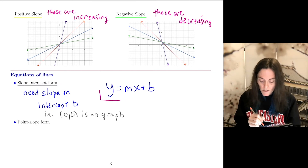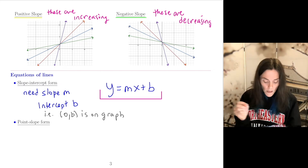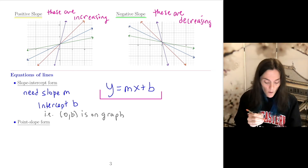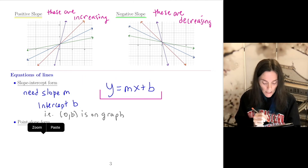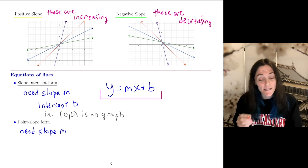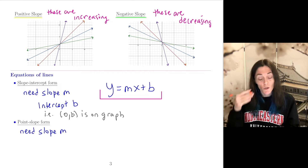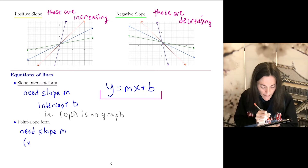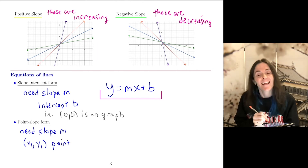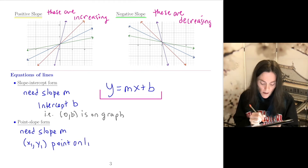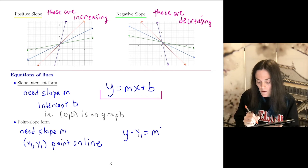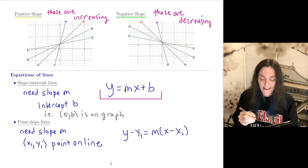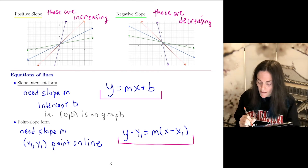For point-slope form, we still need the slope, but this is often easier because you may not know the intercept. You need the slope and a point (x1, y1) — any point on the line. The equation is y minus y1 = m(x minus x1). Both forms are very important and we will practice both.